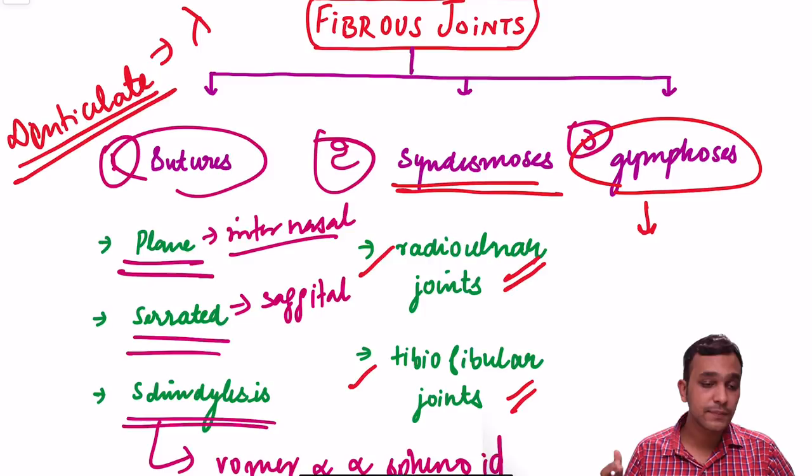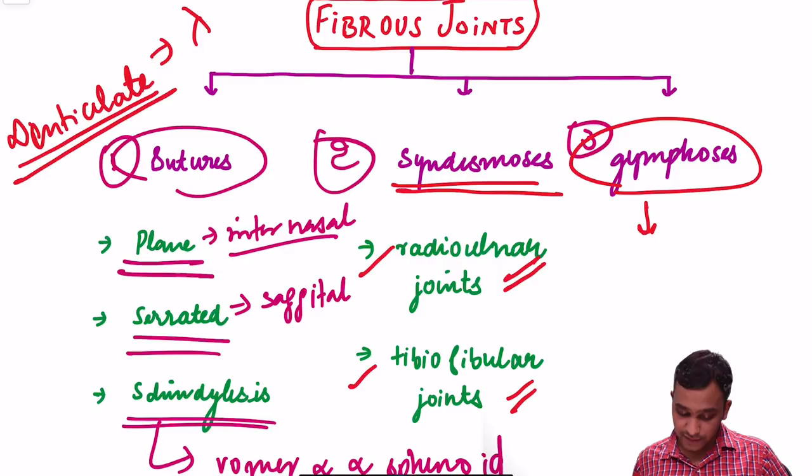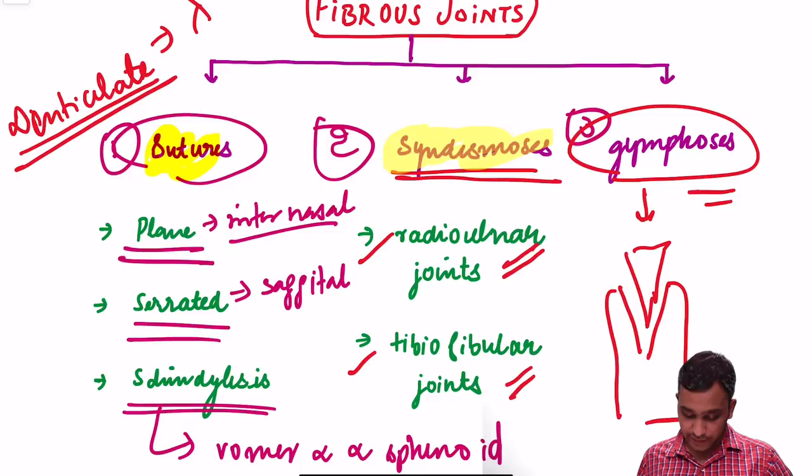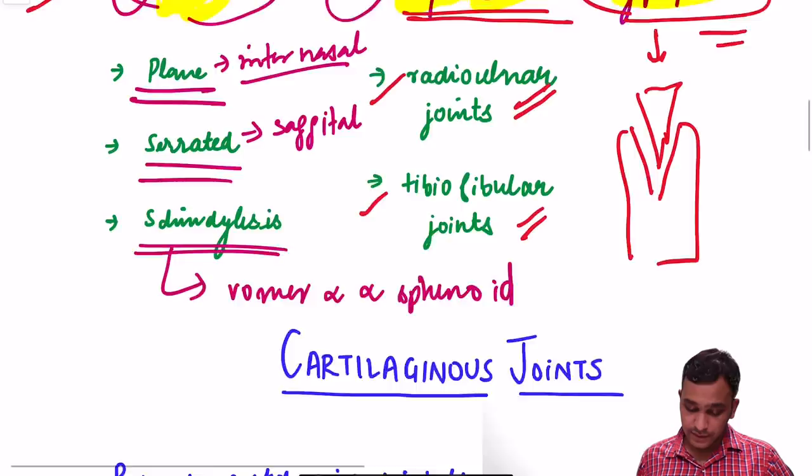Gomphosis is seen in the alveolar sockets of the mandible and maxilla. Revising again: fibrous joints are of three types — sutures, syndesmosis, and gomphosis. Coming now to cartilaginous joints.